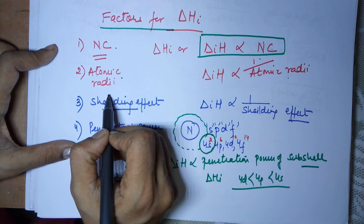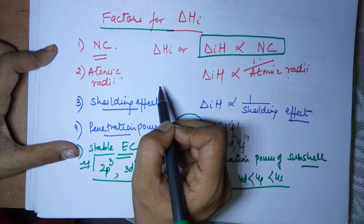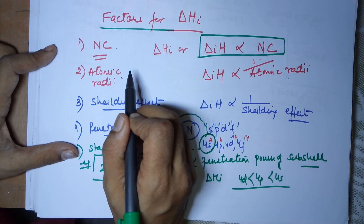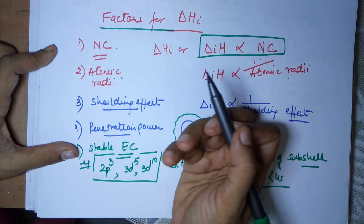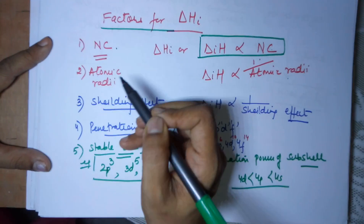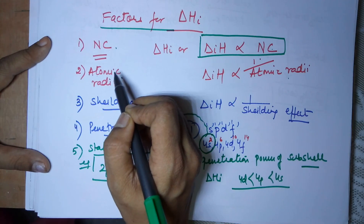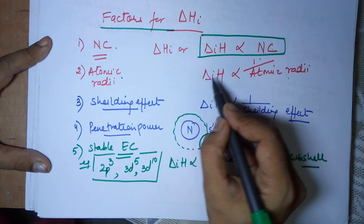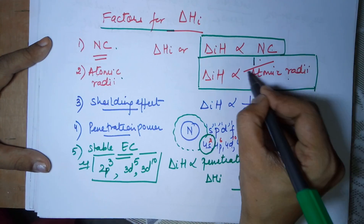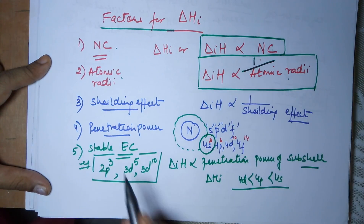The second factor is atomic radii. If the size of an atom is large, then the outermost shell is farther away from the nucleus. If it is farther away, the force of attraction between the last electron and the nucleus decreases. If the force of attraction is less, the energy required to remove that electron is definitely going to be less. So if the size is more, attraction becomes less, removal of the electron becomes easy, and ionization energy becomes less. Hence ionization energy is inversely proportional to atomic radii.